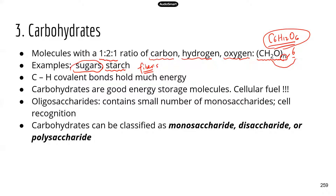Carbohydrates have a critical function: they are used as energy storage. Our body obtains energy from carbohydrates in food, and our body can also store excess energy in the form of carbohydrates. Carbohydrates are so critical as an energy source because the carbon-hydrogen bond — a type of covalent bond — can hold a lot of energy, and carbohydrate molecules have a lot of carbon-hydrogen bonds. That's why carbohydrates are perfect molecules for storing energy.